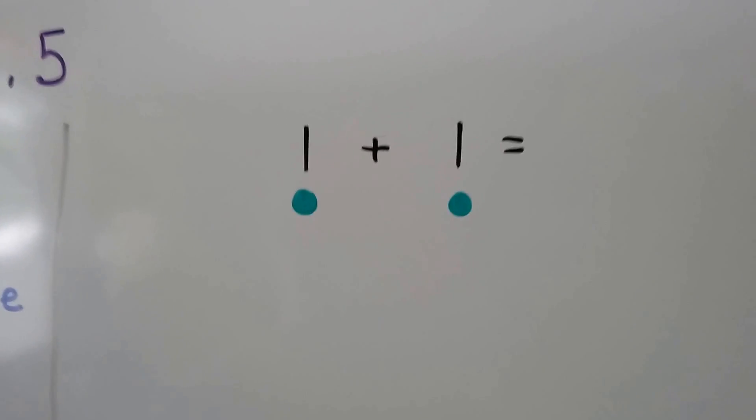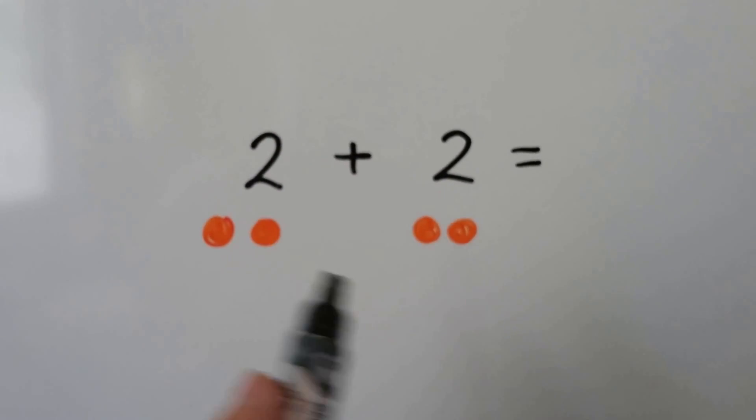Okay, so double ones would be one plus one. That would be two. Double twos, that would be two plus two. Two, three, four.